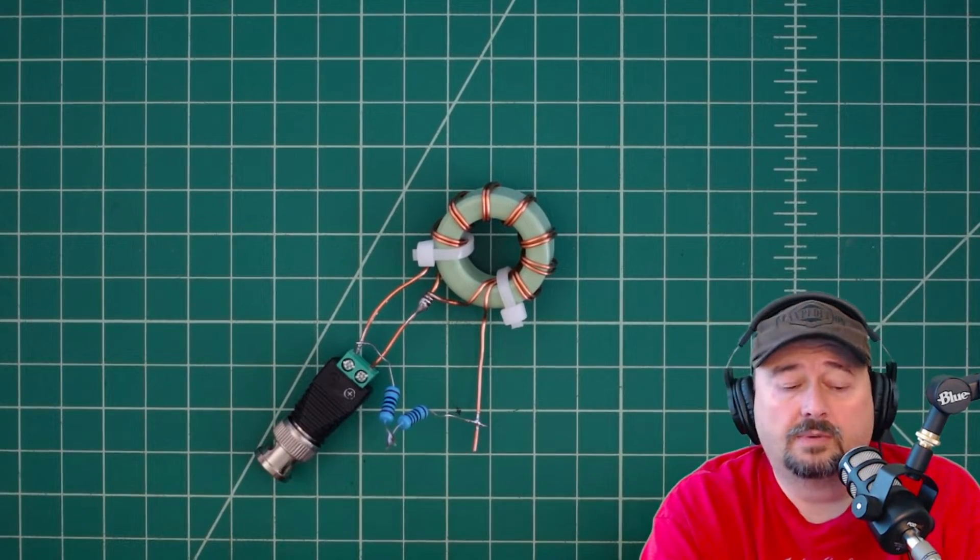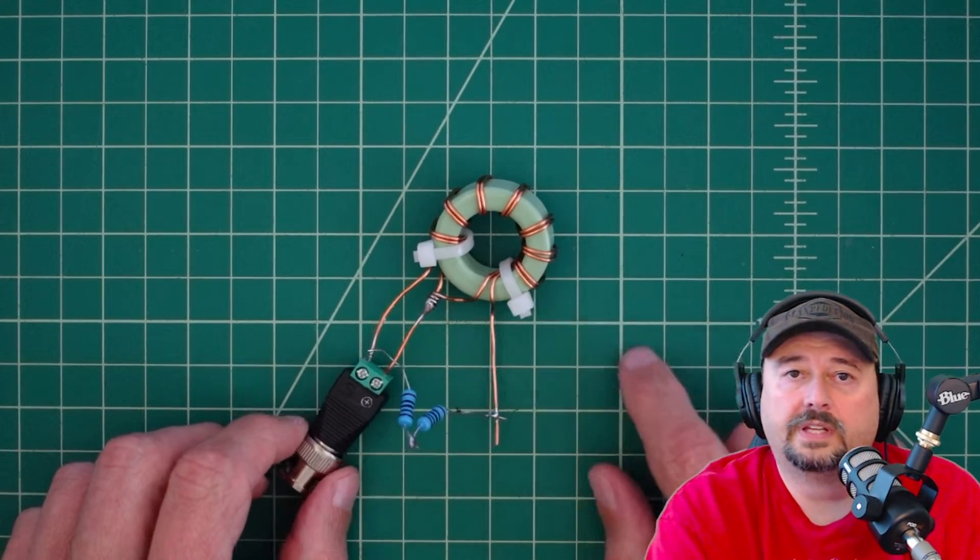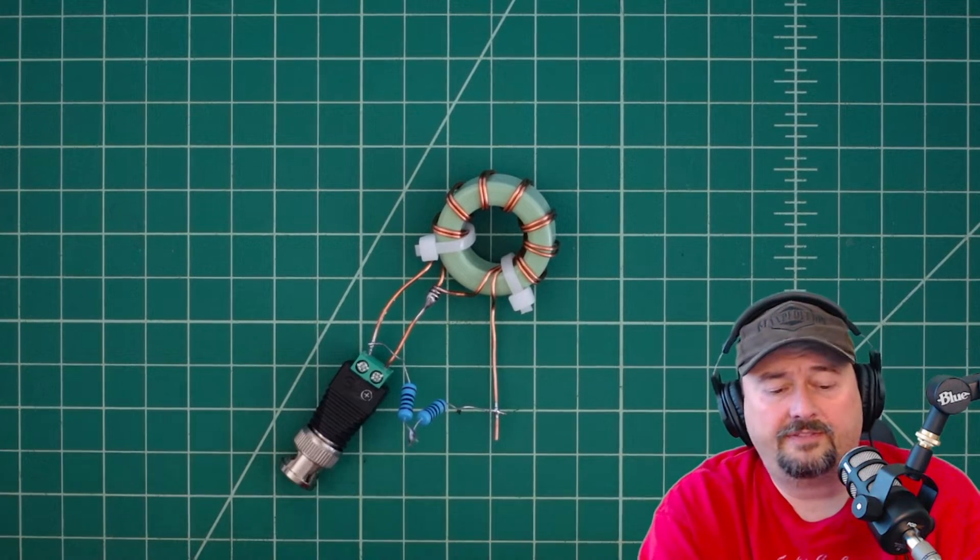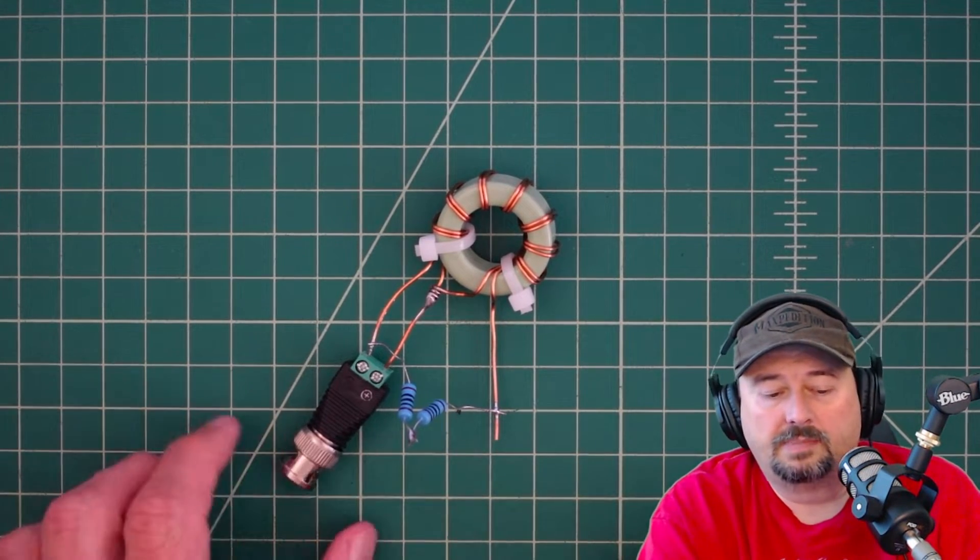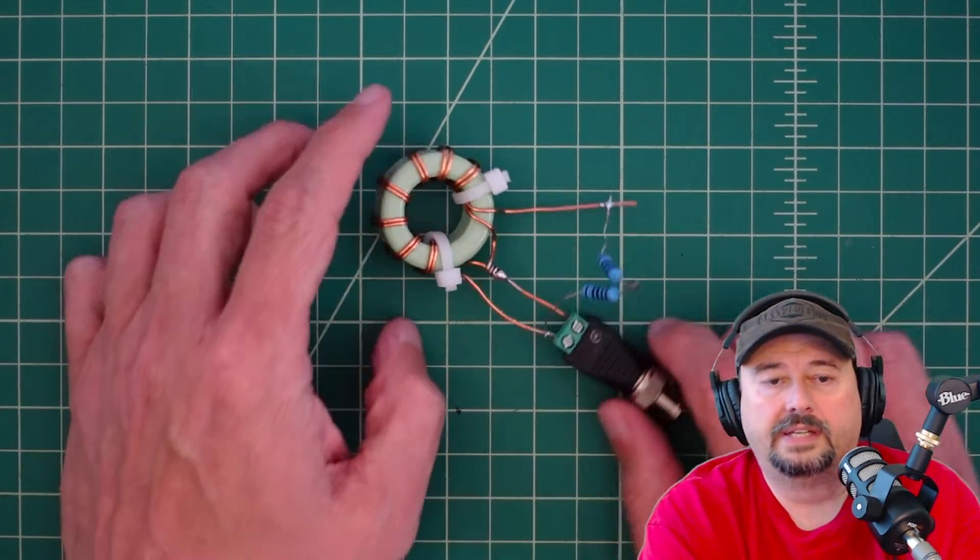Alright folks, so in today's video we're going to talk a little bit about this green toroid that I have here and how I have it configured in a 4 to 1 unun. In particular this is a voltage unun and let's talk about it.